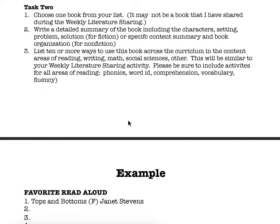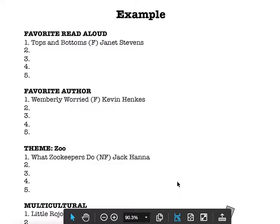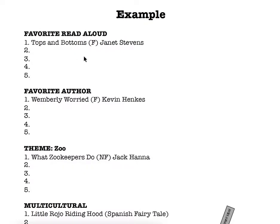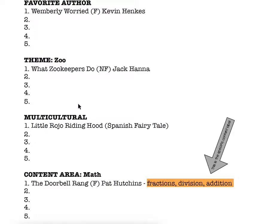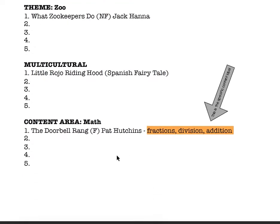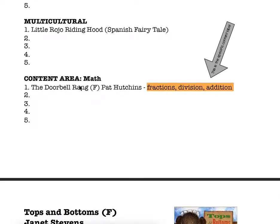That's the project. I have an example here for you. For the book list, I have my favorite read-aloud category and would list five books, labeling fiction or nonfiction and the author. Then I pick one author — I pick Kevin Henkes — and have the title and label as fiction or nonfiction for each of the five books. My theme is zoo. For the multicultural category, I have Little Rojo Riding Hood, which is a Spanish fairy tale. And for my content area, I have math and would choose The Doorbell Rang by Pat Hutchins — you can use that story to teach fractions, division, or addition.